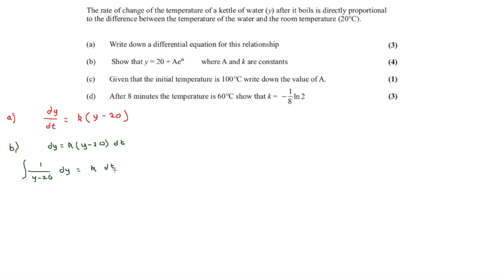Integrating both sides gives ln of the modulus of y minus 20 on the left, and on the right it's kt plus c, since k is just a constant — for example if k were 5 it would be 5t plus c.